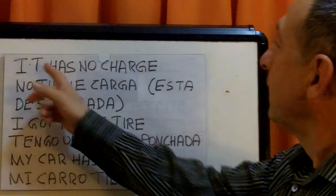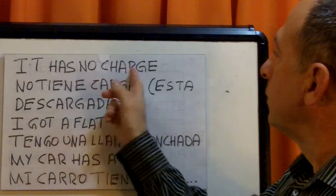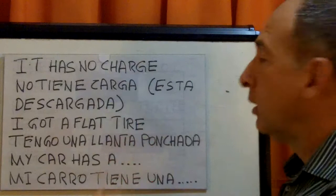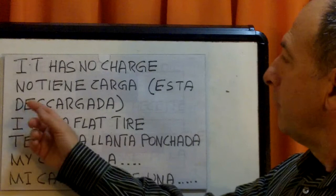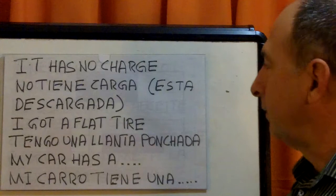We're talking about the battery. It has no charge — no tiene carga. No tiene means 'it has no.' No tiene carga. Or you can say: está descargada — either way. Mi batería está descargada. My battery has no charge — mi batería no tiene carga. Or: mi batería está descargada.